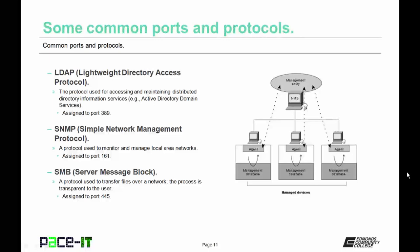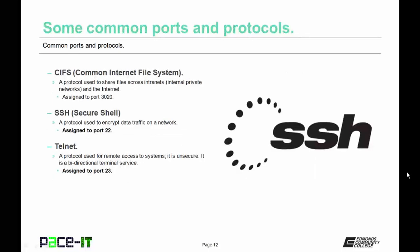Then we have SNMP, Simple Network Management Protocol — a protocol used to monitor and manage local area networks. Next up is SMB, Server Message Block, a protocol used to transfer files over a network, kind of like FTP, but the process is transparent to the user. It's assigned to port 445. Then we have CIFS, Common Internet File System, a protocol used to share files across intranets, internal private networks, and the internet — assigned to port 3020. SSH, Secure Shell, mentioned earlier, is a protocol used to encrypt data traffic on a network and is assigned to port 22.